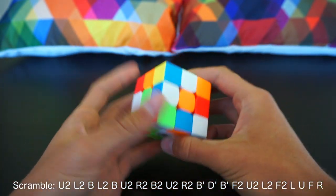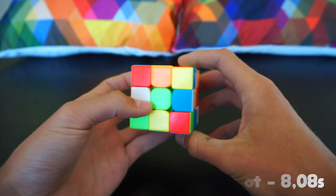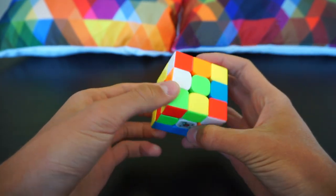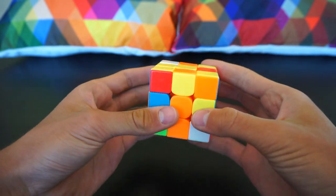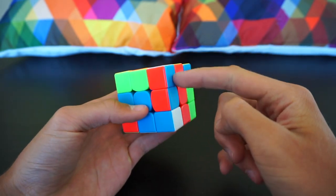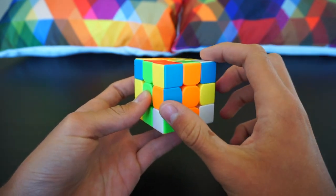This is the second scramble. As you can see, these three, the cross is really easy. We just make a D2 misaligned cross, so insert that one, that one, that one, and that one, and solve the cross. First I saw this pair, so I took it out and inserted it in the back.